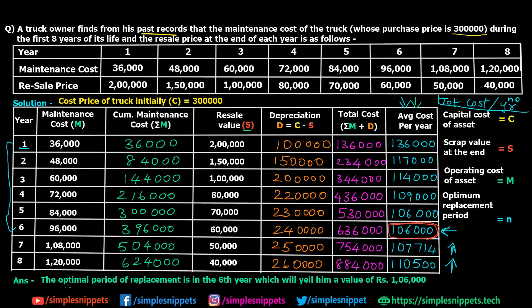So the final answer is that the optimal period of replacement is in the sixth year, which yields an average cost of 1,06,000 — after which costs start increasing. You should mention the year number and the value. This was a type 1 numerical — replacement of a deteriorating object (a truck) whose maintenance cost increased and resale price decreased over time, with money value not changing.